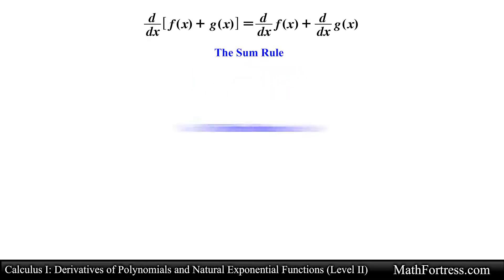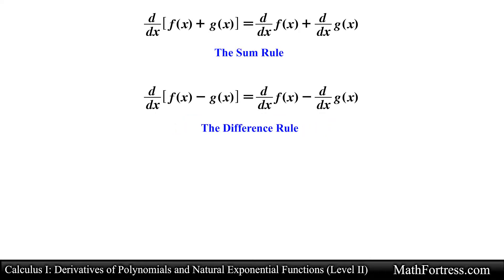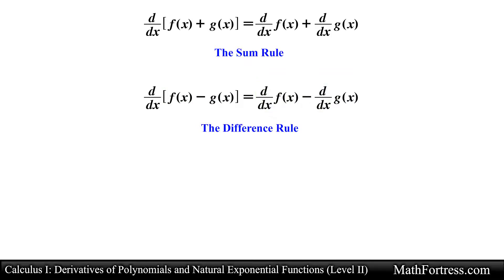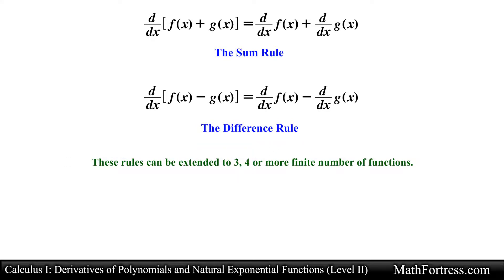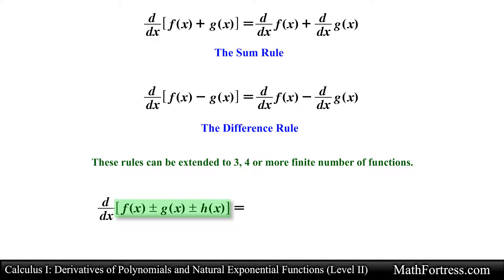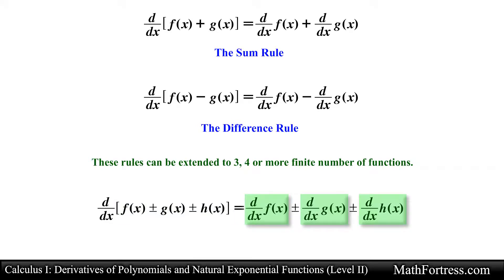Another rule very similar to the Sum Rule is the Difference Rule. Just like the Sum Rule, this rule states that when taking the derivative of two functions being subtracted from one another, you take the derivative of each individual function. Using prime notation: (f − g)′ equals f′ − g′. These rules can be extended to 3, 4, or more finite number of functions. For instance, to find the derivative of a sum and/or difference of functions, simply take the derivative of each function one by one.